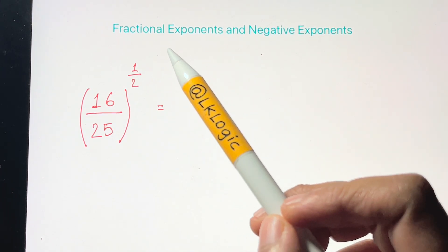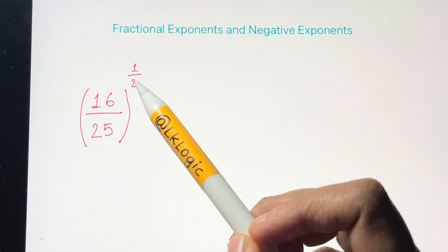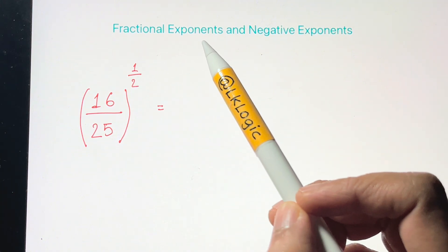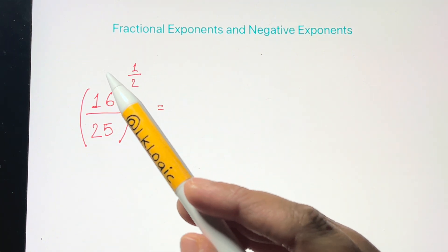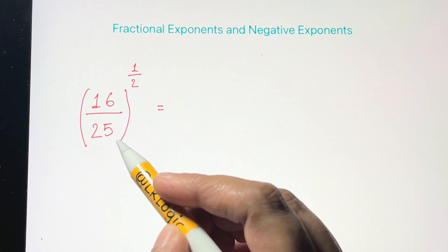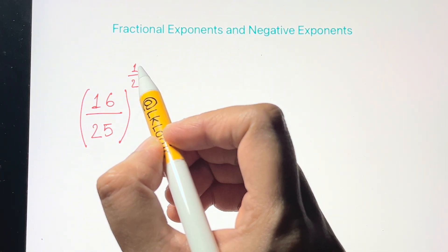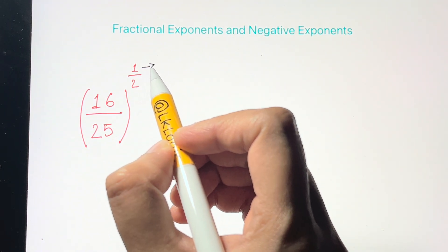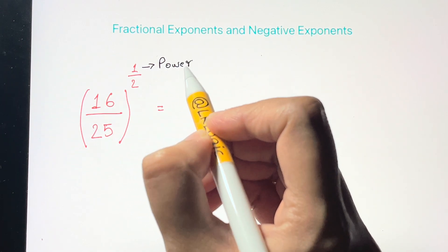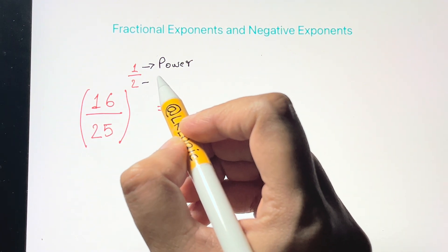Hi guys, in this video we're going to solve fractional exponents and negative exponents. In a fractional exponent, the exponent is a fraction. Here in this question we have 16 over 25. For a fractional exponent, the numerator is always the power and the denominator is always the root.